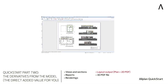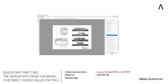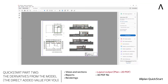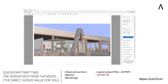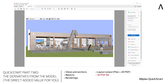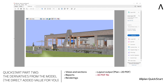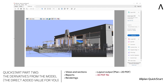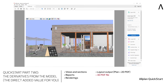Of course, the topic of layout output cannot be missed. We will create a plan and a 2D PDF file as an example in Quickstart. Then, as another conversion, we will create a 3D PDF of your building model. Anyone whom you provide this file to can view and rotate the 3D model in the free Adobe Acrobat Reader, and thus also easily get an overview of the model, even without CAD.